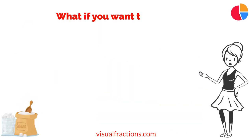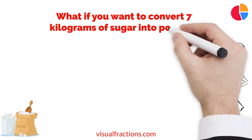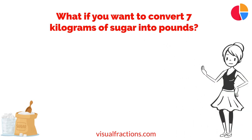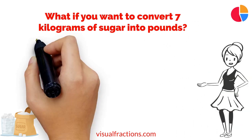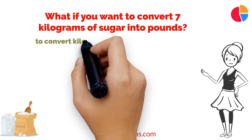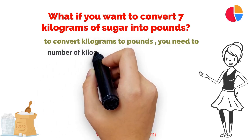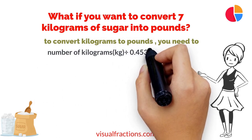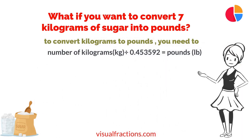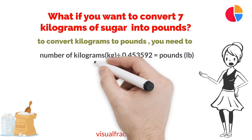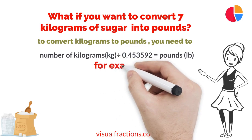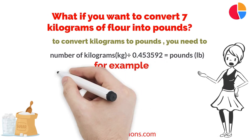But what if you want to convert seven kilograms of sugar into pounds? No worries — it's just as straightforward. To convert kilograms to pounds, you need to divide the number of kilograms by the conversion factor of 0.453592.